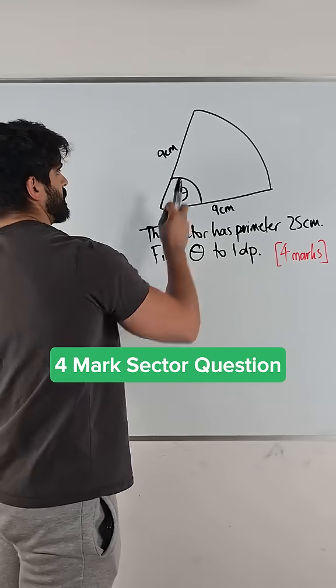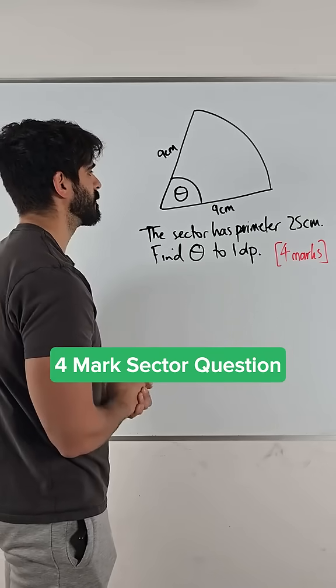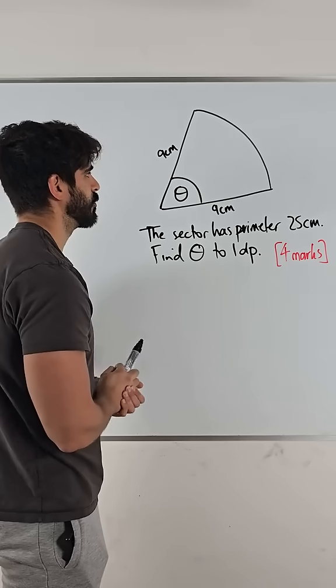We have a sector here and it says the sector has perimeter 25 centimeters. Find theta to 1 decimal place.